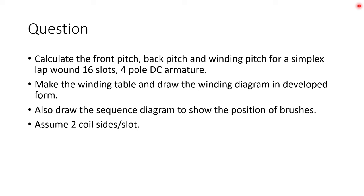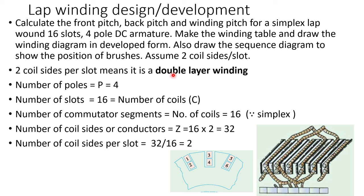It is given to assume that two coil sides are per slot. Two coil sides per slot means it is a double layer winding. Double layer winding means in a single slot there are two coil sides as indicated in the diagram. So in each slot there would be two coil side layers. Number of poles is 4 and number of slots is 16, which is equal to number of coils. Number of commutator segments would be equal to number of coils, that is 16, because it is a simplex winding. Number of coil sides would be number of coils multiplied by 2, so there would be total 32 coil sides, and coil sides per slot would be 32 by 16, that is 2.